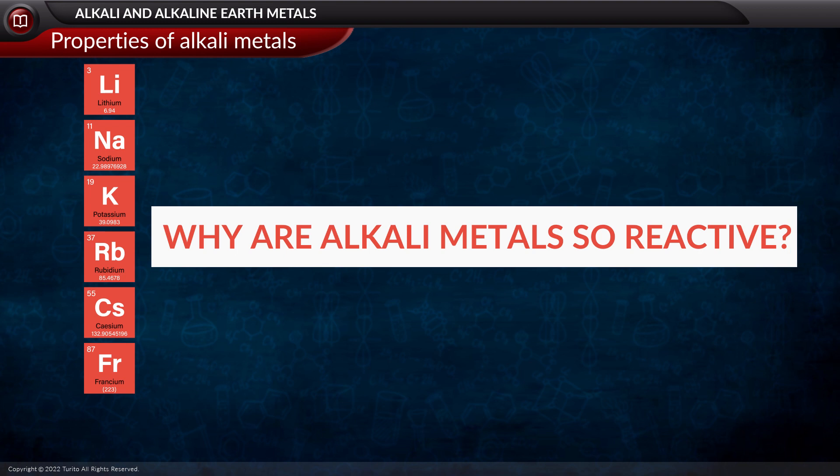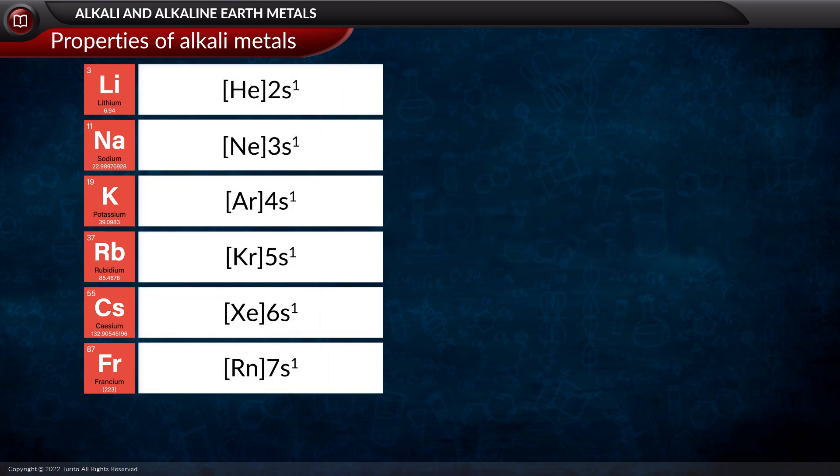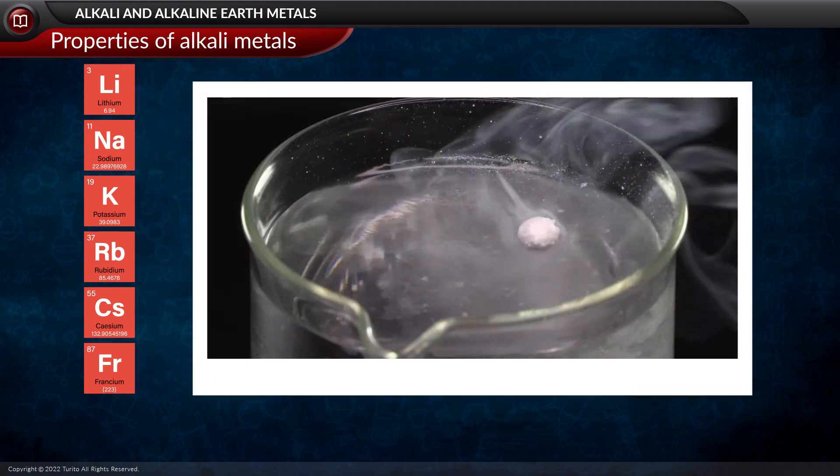Why are alkali metals so reactive? Well, the high reactivity of group one metals is attributed to the presence of one electron in the valence shell, which it can readily lose to gain stability. And do you know that they react explosively with water?